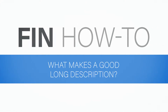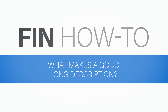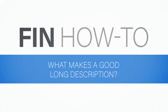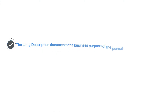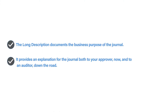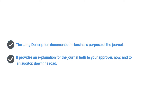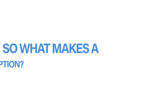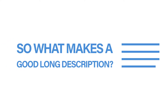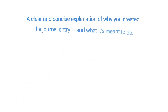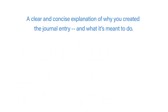One of the required fields in a journal entry is the long description. The long description documents the business purpose of the journal. It provides an explanation for the journal both to your approver now and to an auditor down the road. A clear and concise explanation of why you created the journal entry and what it's meant to do makes a good long description.